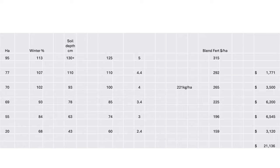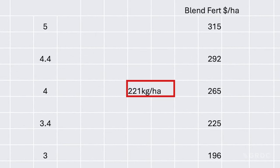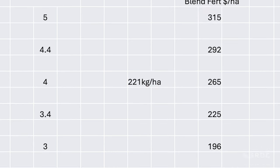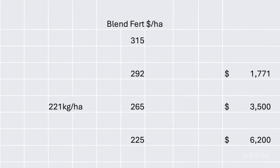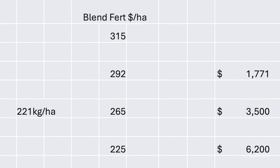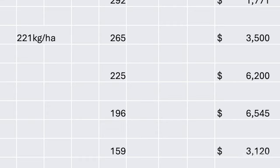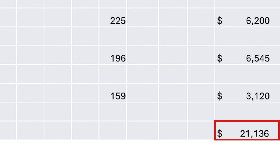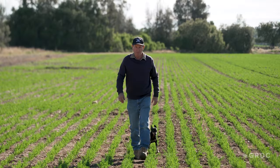When we go through to how that translates into costs — we spread an average of 221 kilos across that paddock. The top rate was 315 kilos, the bottom rate was 159. Had we thought we really need to target our top yield area and spread 315 across the whole lot, our savings with variable rate for the different areas tally up to about $21,000. As fertilizer prices are getting higher, variable rate is starting to be pretty interesting for everyone.